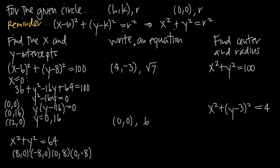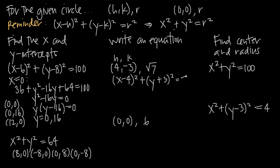In the next examples, we want to write the equation of a circle given the center and radius. Here the center is (4, negative 3) and the radius is square root of 7. Plugging into the formula, we get (x minus 4) squared plus (y minus negative 3) squared, which becomes (x minus 4) squared plus (y plus 3) squared. Since r is the square root of 7, r squared equals 7. So the equation of the circle is (x minus 4) squared plus (y plus 3) squared equals 7.